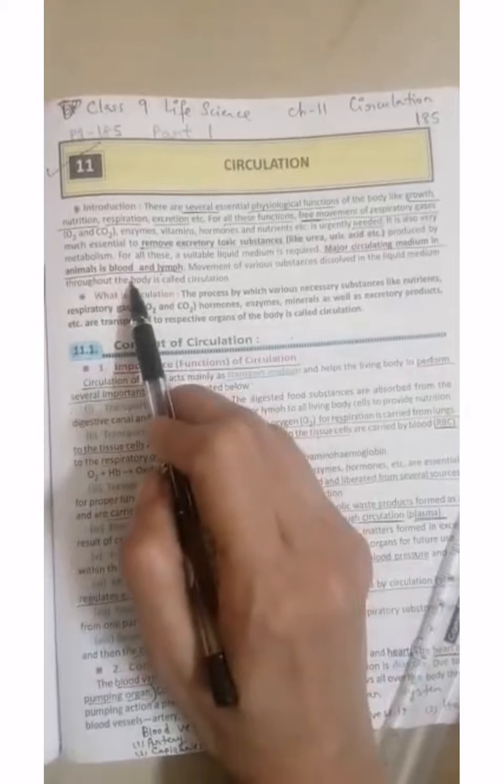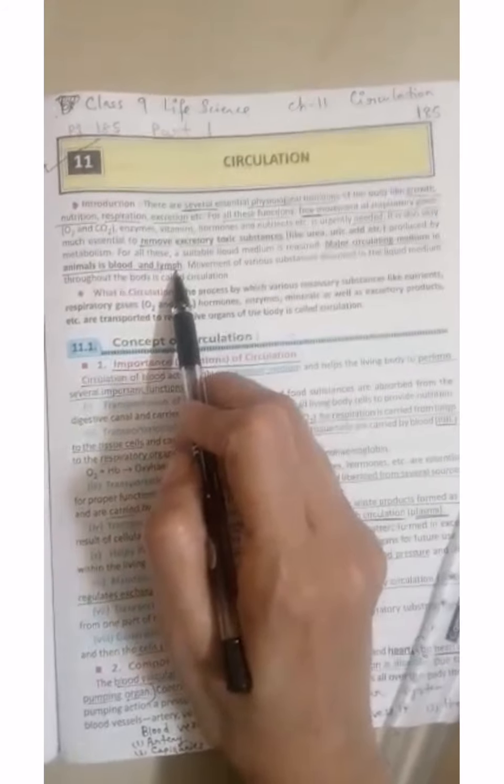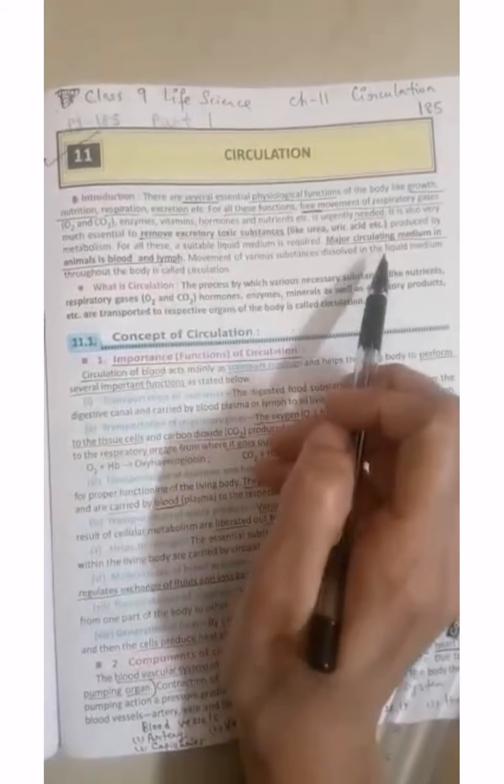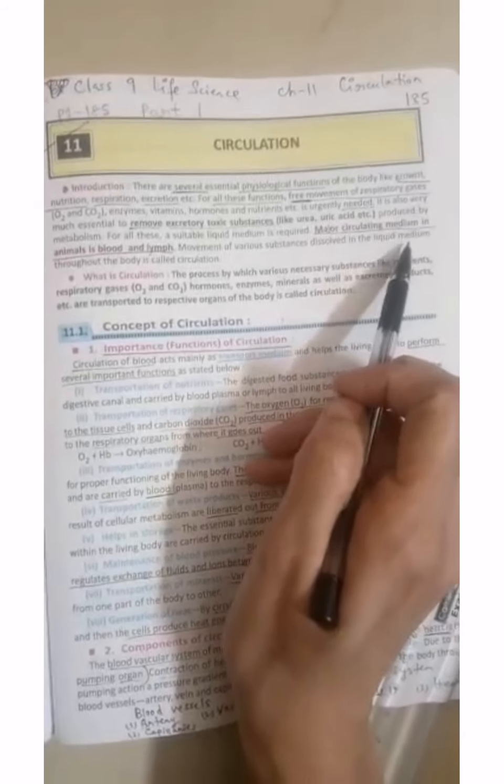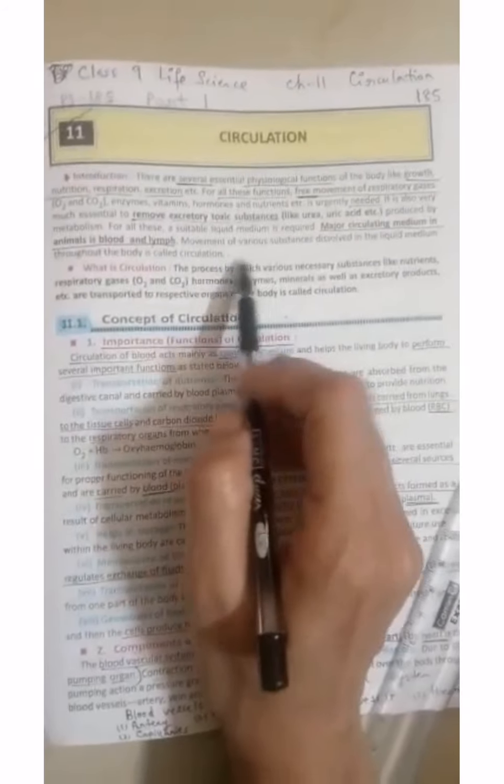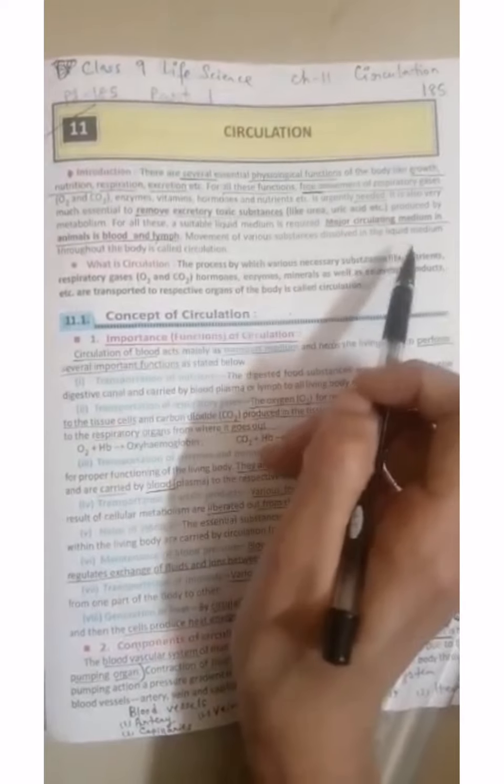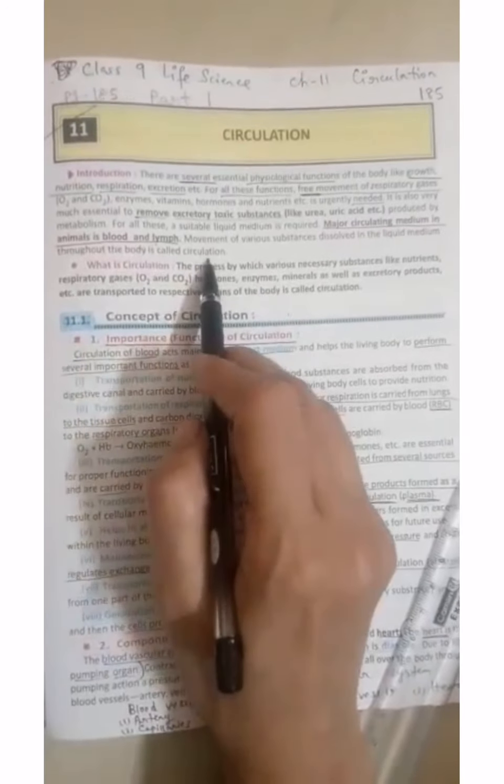Circulating medium in animals is blood and lymph. These two you have to remember. What is the circulating medium? Blood or lymph. Movement of various substances dissolved in the liquid medium throughout the body is called circulation.